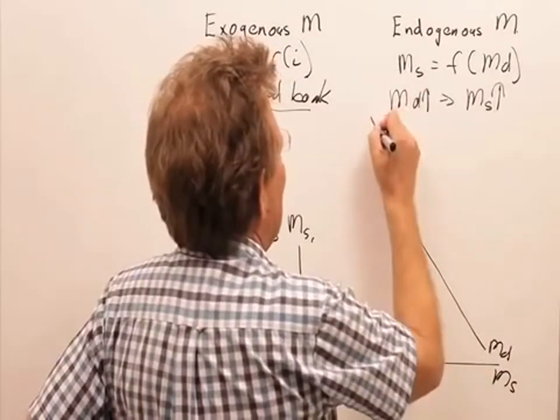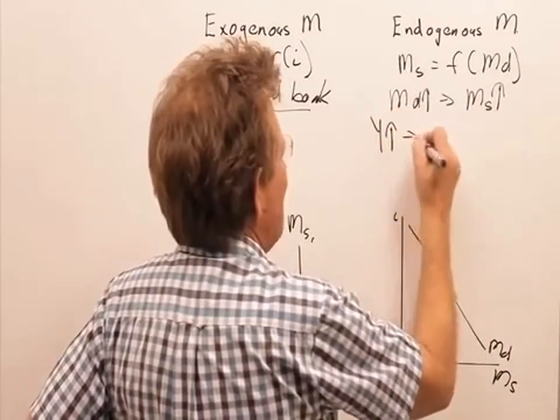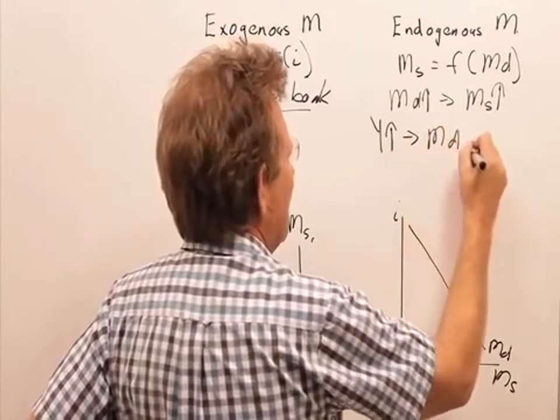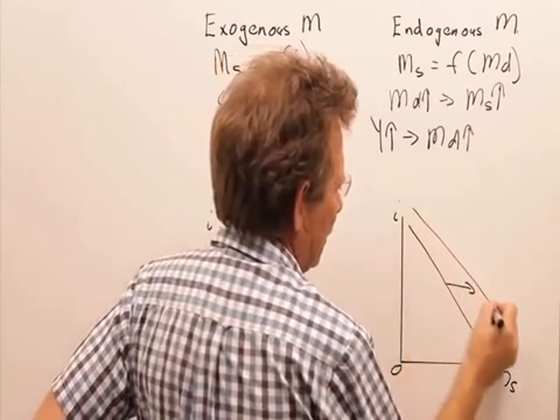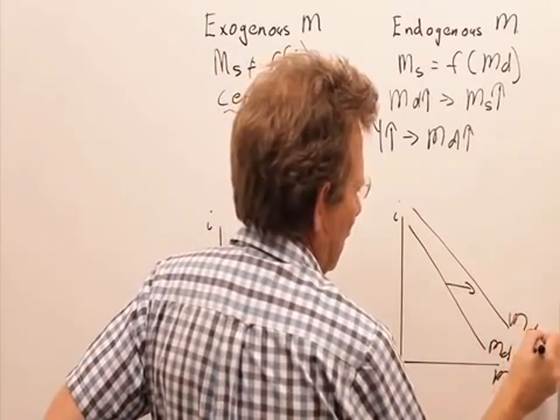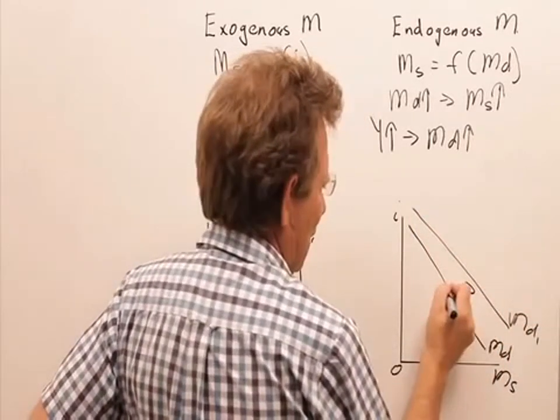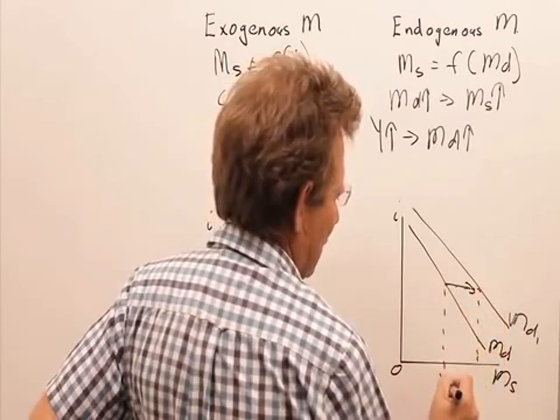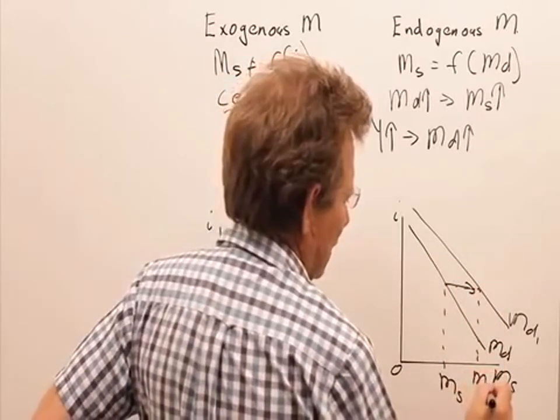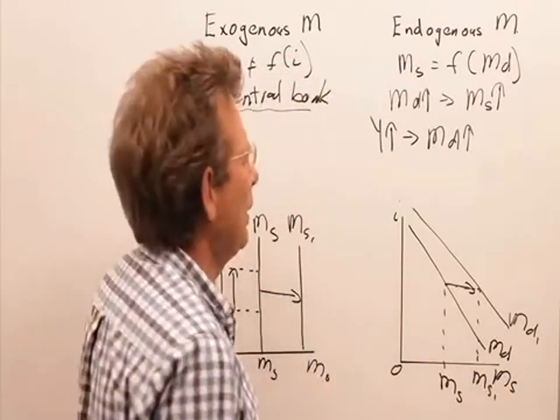So what we know is if you increase the level of output in the economy, the demand for money will increase. That is sort of a rightward shift of the money demand curve. And you can see as the demand increases, the money supply adjusts, and there is more money in the economy.